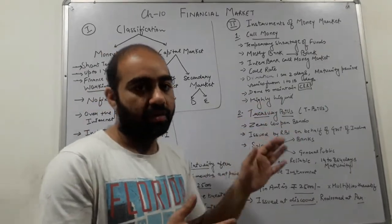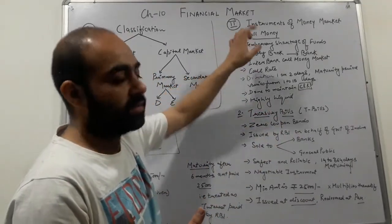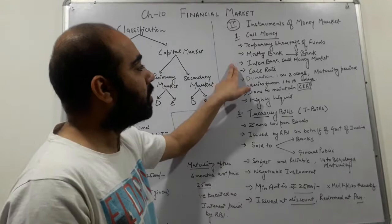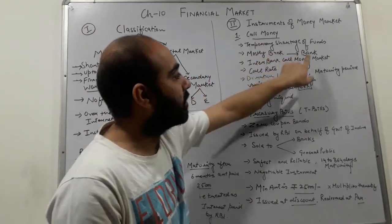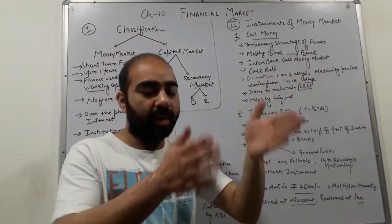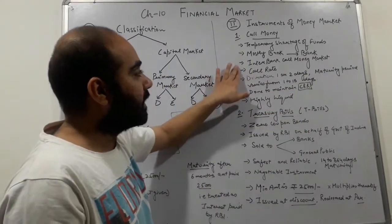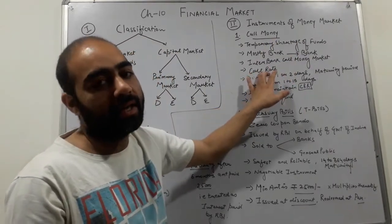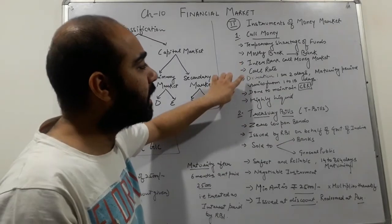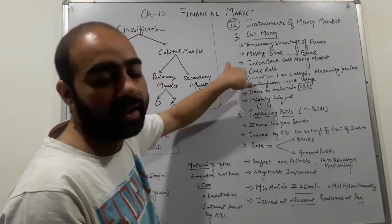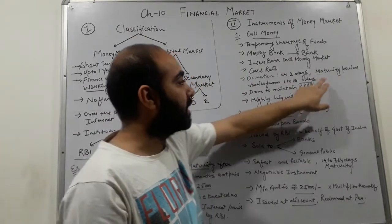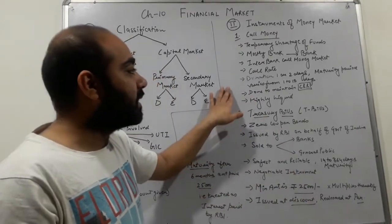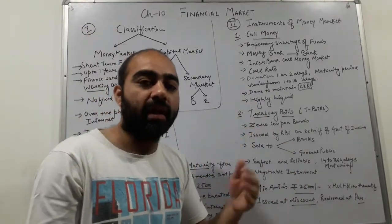Call money is a short-term market used for temporary shortage of funds. These are mostly bank-to-bank transactions — interbank call money market. For example, ICICI Bank and HDFC Bank transact with each other, and the interest rate charged is called the call rate. The duration of call money is from one day to two days, but the maturity time can be extended up to 15 days. This market is primarily used to maintain the CRR — Cash Reserve Ratio.